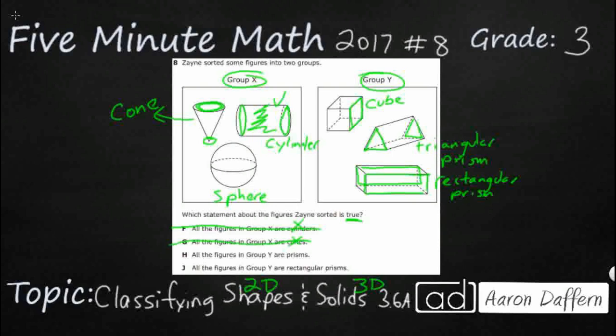All the figures in Group Y are prisms. Hmm. Let's just put a question mark on this because I see this word prism at the end of here and at the end of here. But I'm not sure if I've ever seen that word by itself. Just a prism, not a triangular prism or a hexagonal prism or a rectangular prism. So let's look at J.